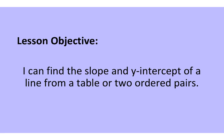The lesson objective is that by the end of this lesson, you can look at a table and not actually have to graph it to find the slope. You can take two ordered pairs from the table and find the slope and y-intercept.